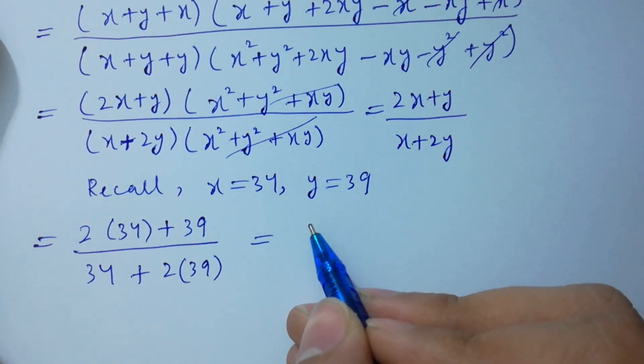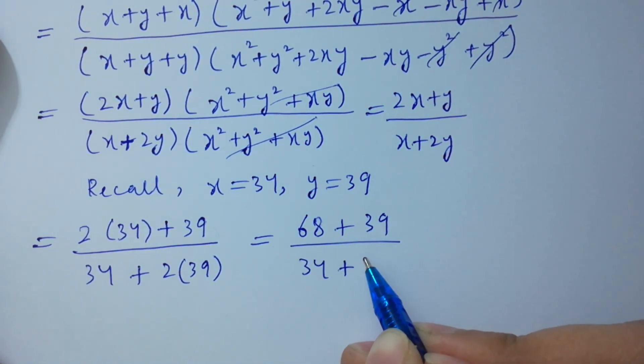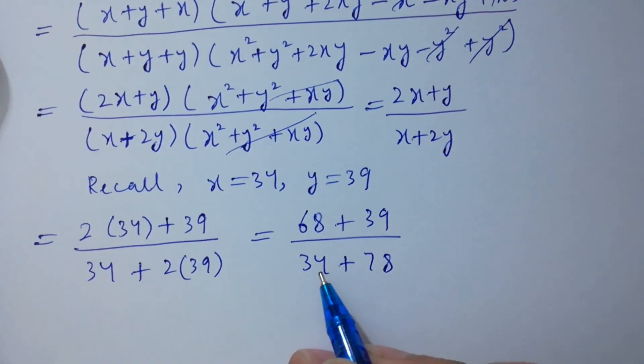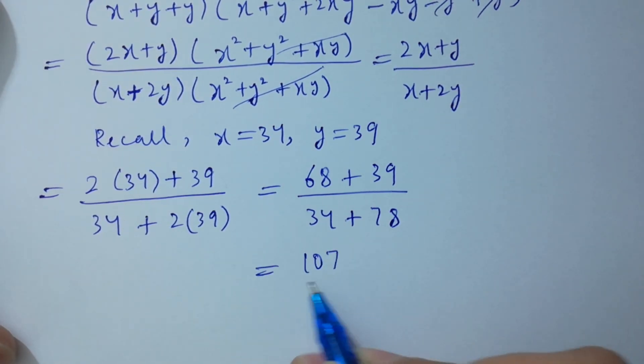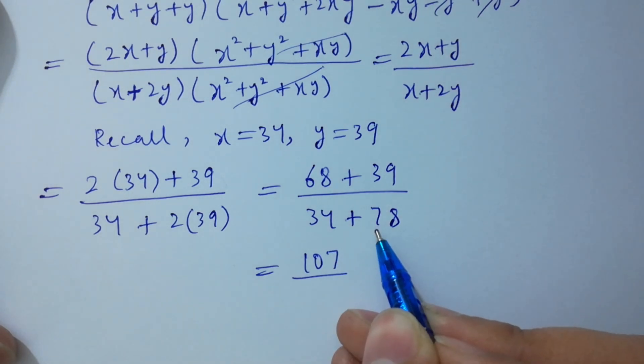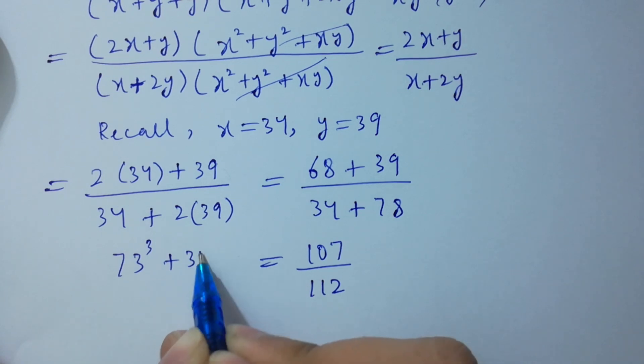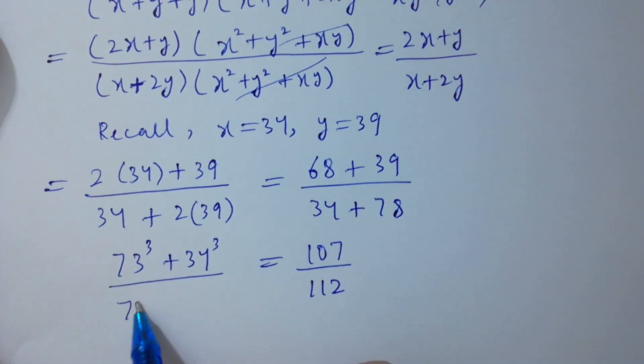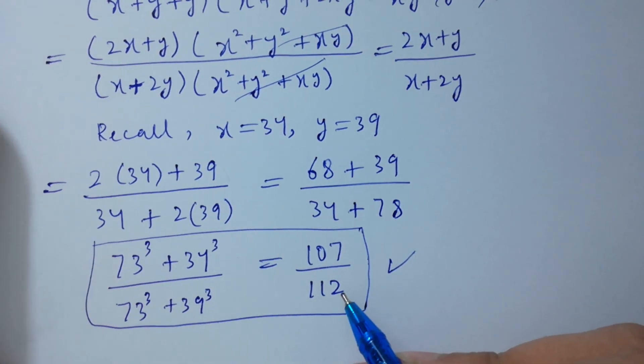2 times 34, we have 68, plus 39, over 34 plus 2 times 39, we have 78. So 68 plus 39 is 107. Finally, 73 cube plus 34 cube over 73 cube plus 39 cube is equal to 107 over 112.